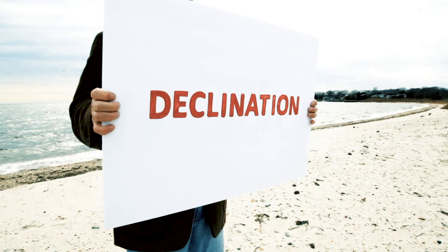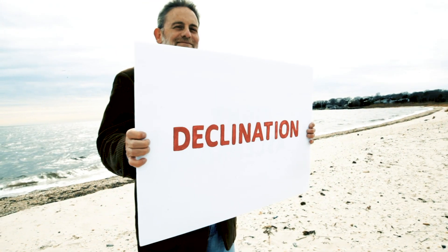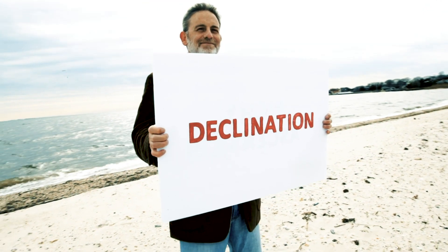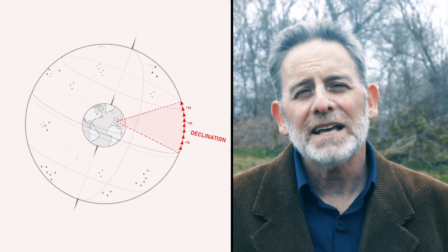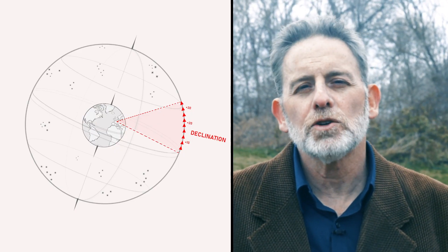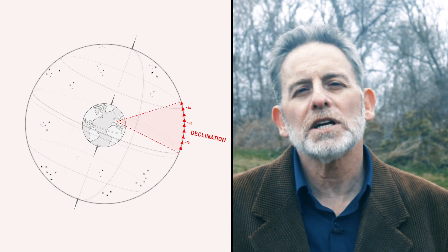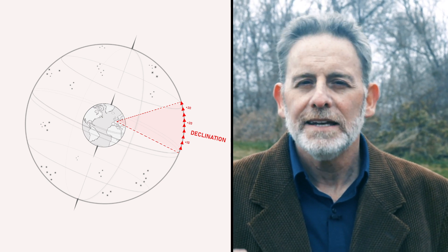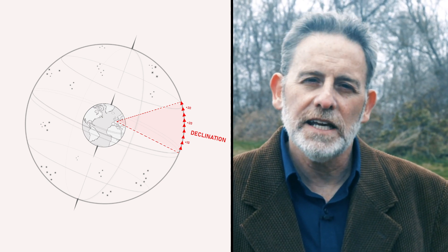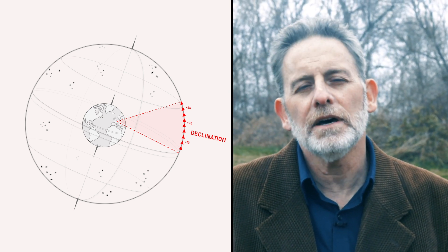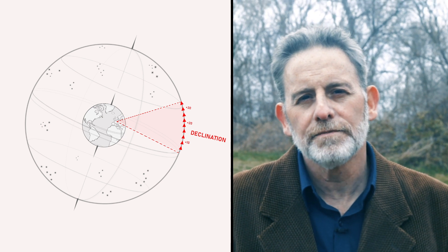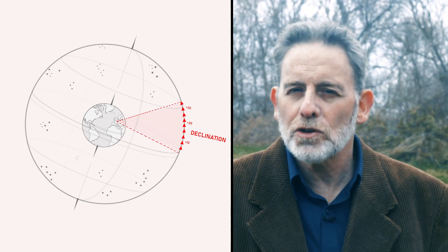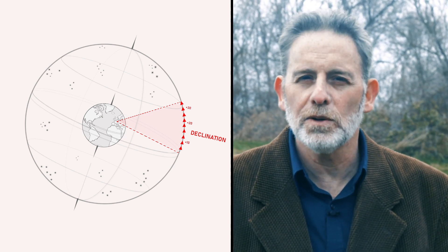Declination is similar to Earth's latitude. The angle of an object is measured above or below the celestial equator. Positive declination refers to objects measured north of the celestial equator. Negative declination refers to objects south of the equator. Declination is measured only in degrees.